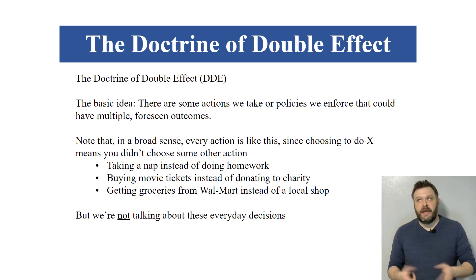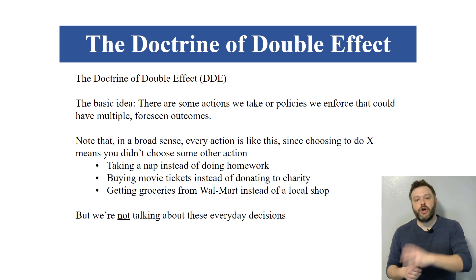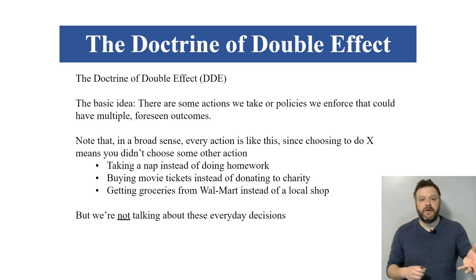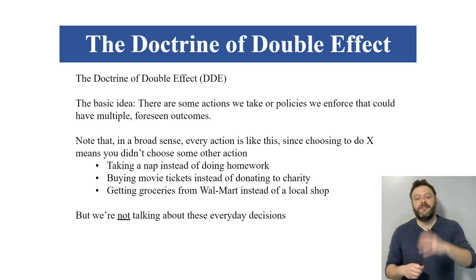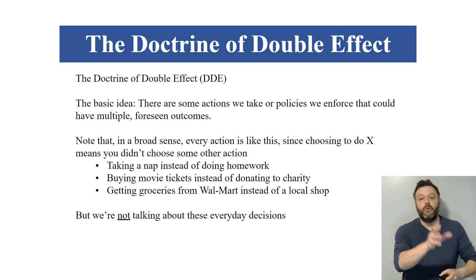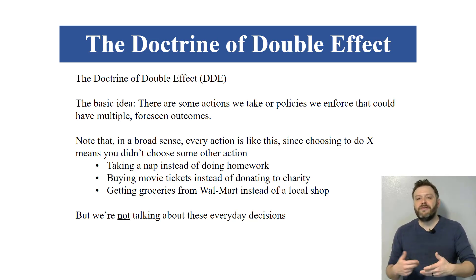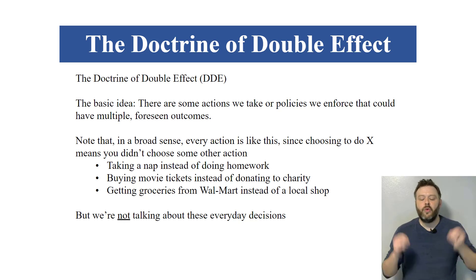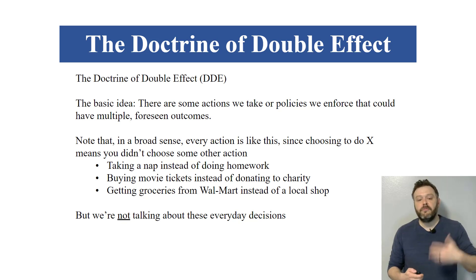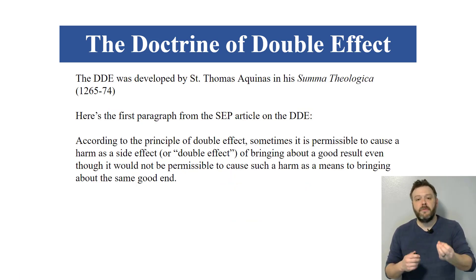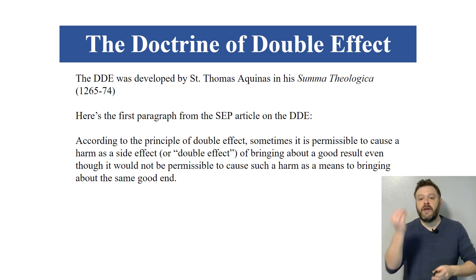Now, technically every action is like this. If you have a bunch of homework to do but you're really sleepy so you decide to take a nap, there's what's called an opportunity cost associated with taking that nap — you will not have as much time to finish your homework. Every decision we make is like this, but we're not talking about that kind of stuff. We are talking about very serious life and death situations. When is it permissible to try to promote some very important good when you know that it is also going to cause some very serious harm?